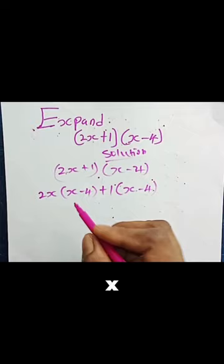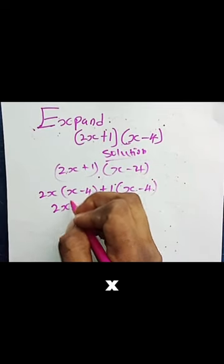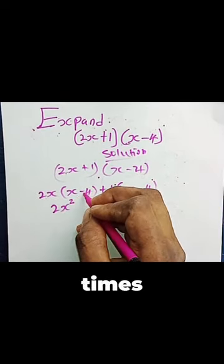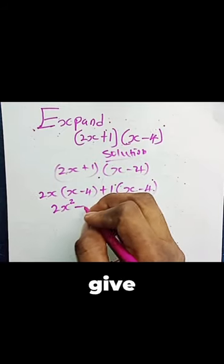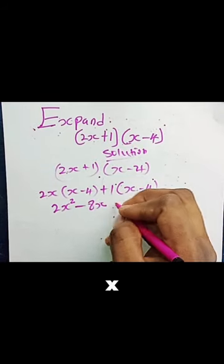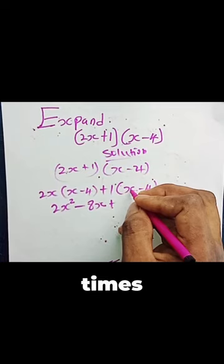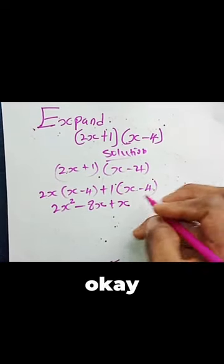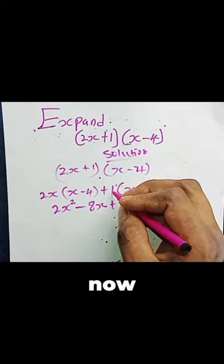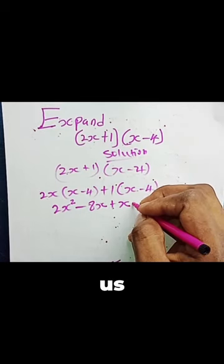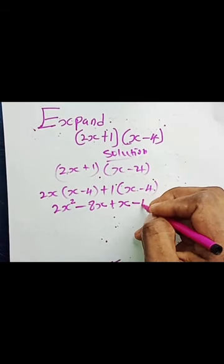Now 2x times x gives us 2x², 2x times minus 4 gives us minus 8x, plus 1 times x gives us x. 1 times minus 4 gives us minus 4.